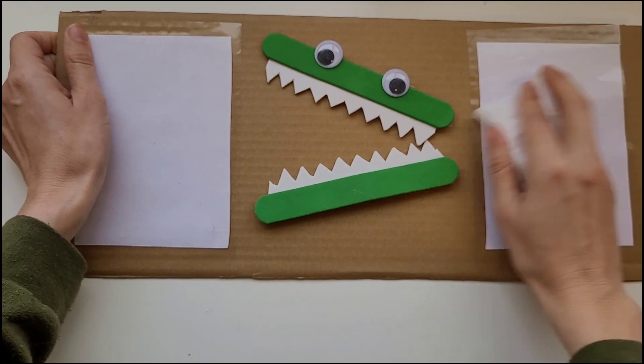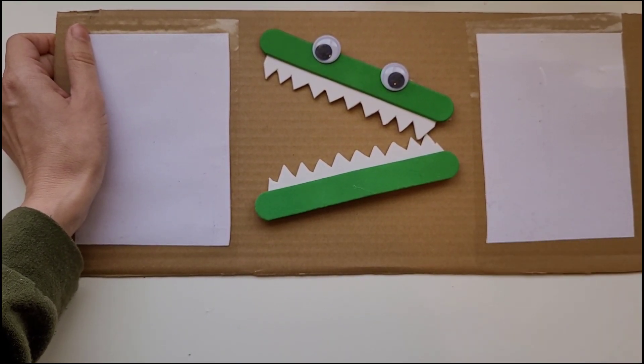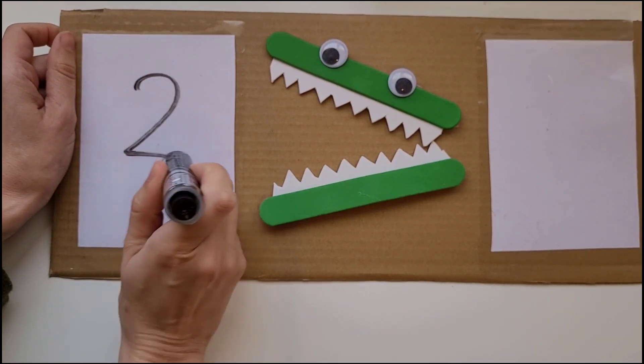You can use the alligator mouth to make the greater than sign, the less than sign, and the equal sign, and your child can practice over and over.